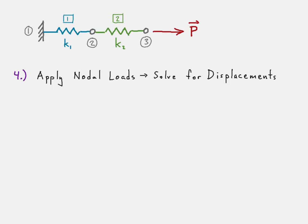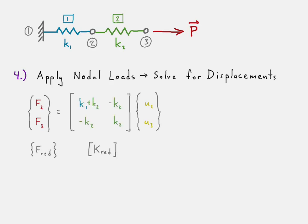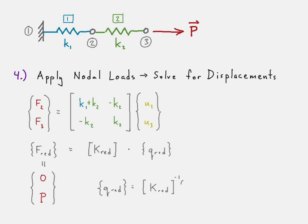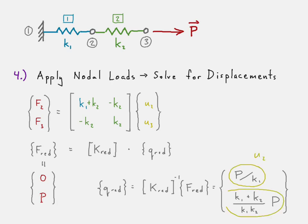Once we have a reduced matrix equation, we can go ahead and apply our nodal loads. There is our original reduced matrix equation. We recognize that our forces at nodes two and three — well, there's nothing applied at node two and P applied at node three. We then invert our reduced stiffness matrix and multiply it by our reduced force vector. That gives us the displacements at node two and node three.